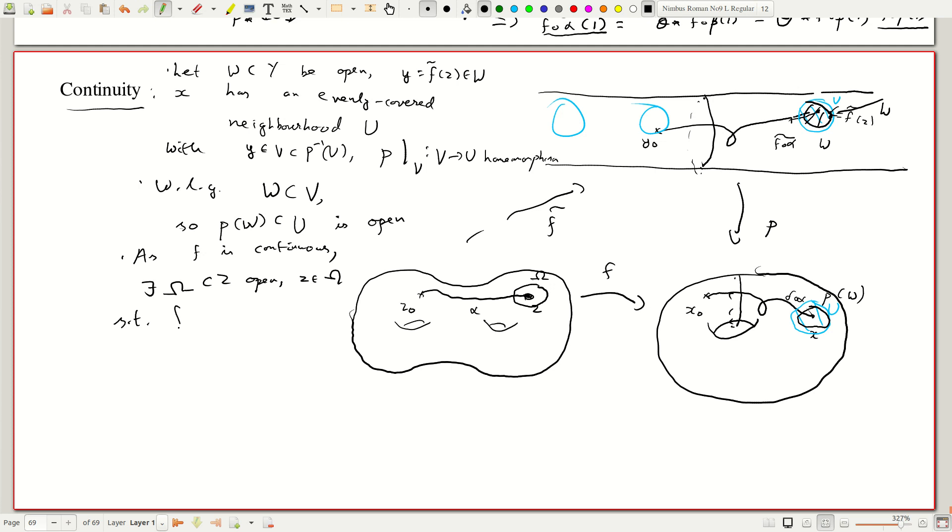such that f of omega is contained in this set which we wanted, which was the target p of w. By LPC, can assume omega is path connected.